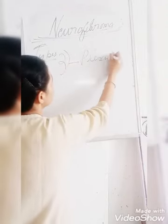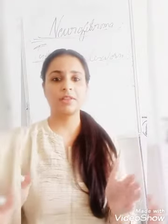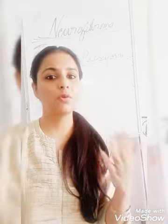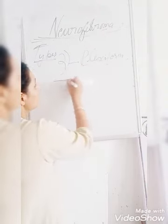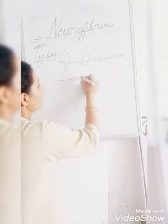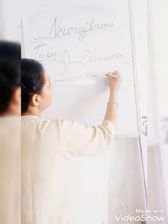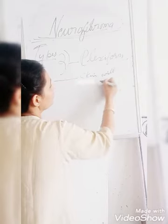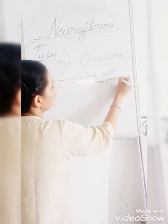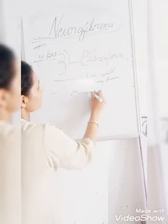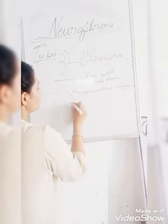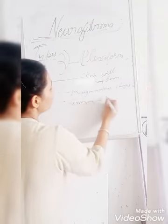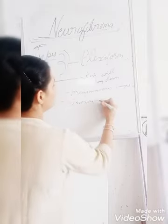The second type is plexiform neurofibroma. Here the nodule will attain an enormous size — it will grow very huge. Along with that enormous size, the skin will get thickened and will hang down. There will also be myxomatous changes.